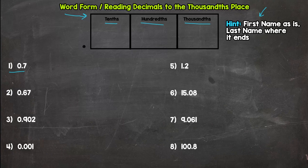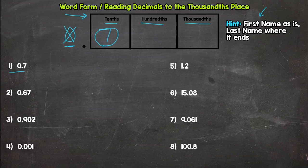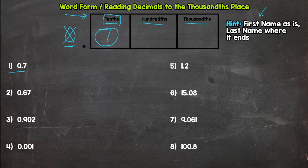We're going to do word form for all of these — write out how you would properly say each number. For number one we have 0.7. We don't have any whole numbers to the left of the decimal, so we just read the decimal portion. First name as is: that's a seven. Last name where it ends: it ends in the tenths place. So you say seven tenths. That's it.